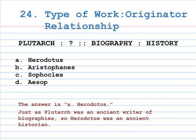Number 24: type of work is to originator relationship. Plutarch is to A. Herodotus, B. Aristophanes, C. Sophocles, D. Aesop, as biography is to history. The answer is A, Herodotus. Just as Plutarch was an ancient writer of biographies, so Herodotus was an ancient historian.